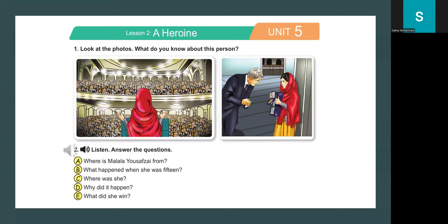Malala Yousafzai is from Pakistan. When she was 15, she was on a bus going home from school when some men attacked and shot her. These men were angry that she was at school. They thought girls shouldn't have an education, but Malala didn't agree. She said, 'One child, one teacher, one book, one pen can change the world.' Malala thinks all girls should get an education. When she was 17, Malala won the Nobel Peace Prize. She is the youngest person to win the prize.